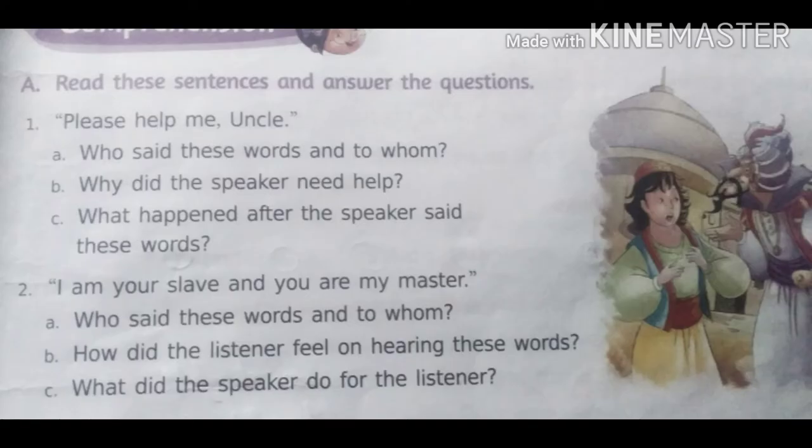The first exercise is: read this sentence and answer the question. It means that some lines are given to you and related with that line some questions are asked. The first line is 'Please help me, uncle.' The questions related to that are: who said this word to whom? Why did the speaker need help? And what happened after the speaker said these words?